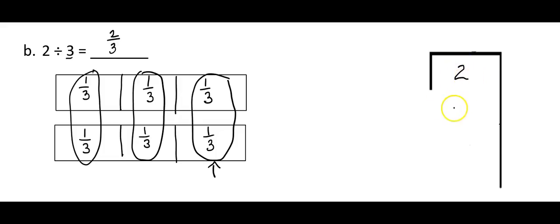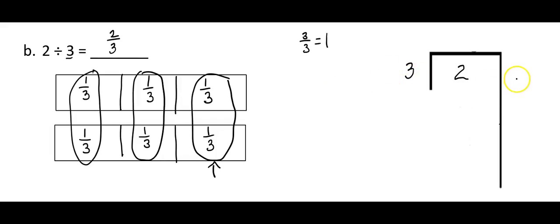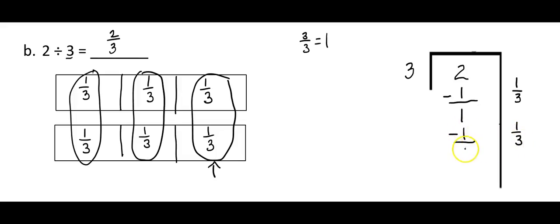Now let's show that on our forgiving method diagram. I'll start with 2 as my dividend, dividing by 3. I know that 3 thirds equals 1 whole, so I can take 3 times 1 third to get 1, and subtract that from the 2 wholes, leaving me with 1 whole. I do the same process again: 3 times 1 third equals 1, subtract that, and I have no remainder. Combining my answers on the outside of the bracket gives 1 third plus 1 third equals 2 thirds, matching my tape diagram answer.